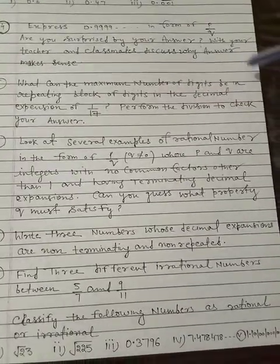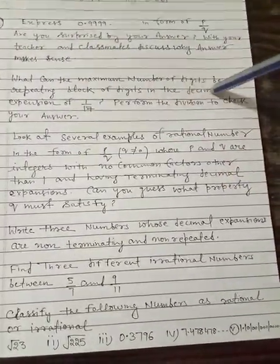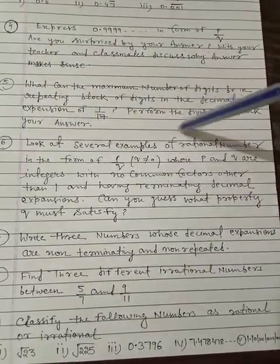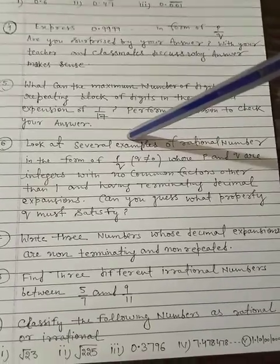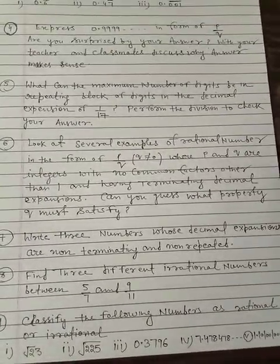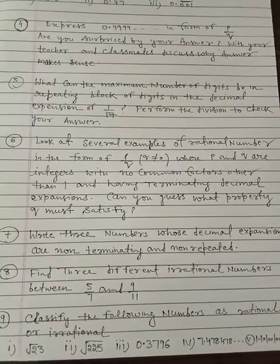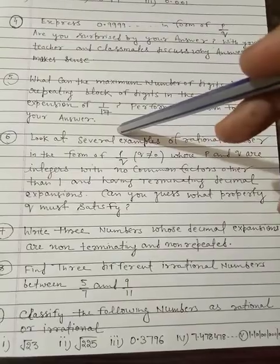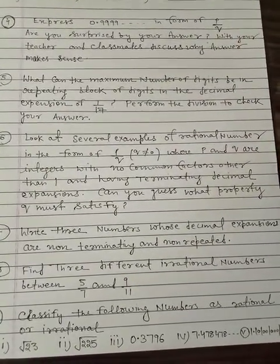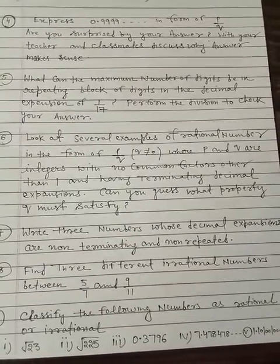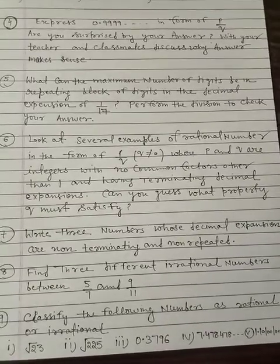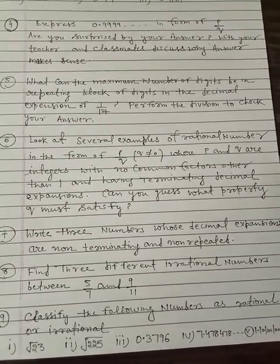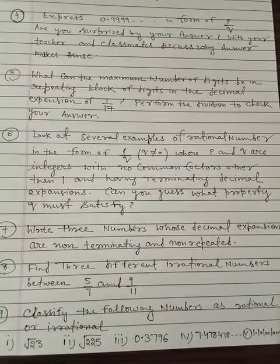Question number 5: What can the maximum number of digits be in the repeating block of digits in the decimal expansion of 1 by 17? Perform the division to check your answer. 1 by 17, that means 1 को 17 से divide करना है. And how many digits are there in the repeating block? You need to find that out. This is very easy. We only have to divide 1 by 17 and see how many digits are in the repeating block, or after how many digits it will repeat. You can do question number 5 yourself.